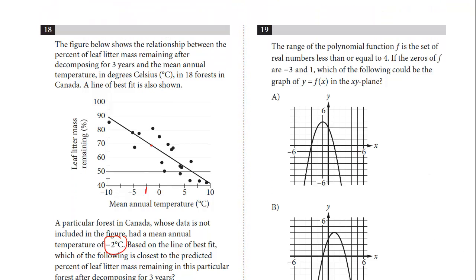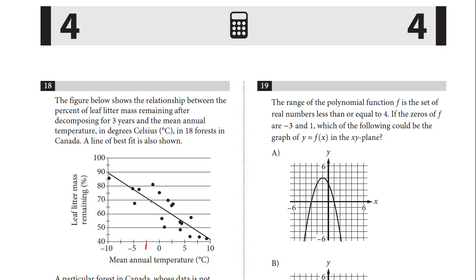Let's take a look at question number 19. The range of the polynomial function f is the set of real numbers less than or equal to 4. The zeros of f are negative 3 and 1, which of the following could be the graph of y equals f of x in the xy plane. So we're given some information about this function.